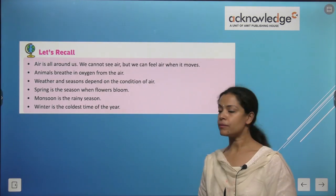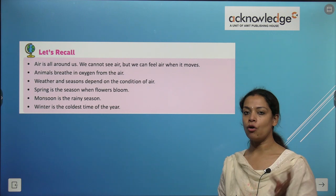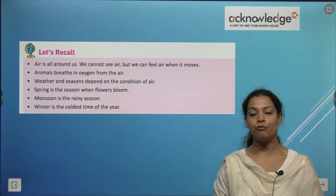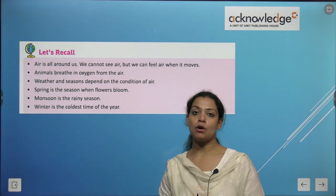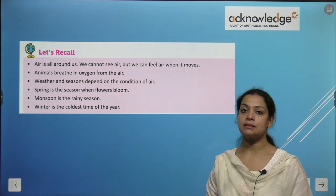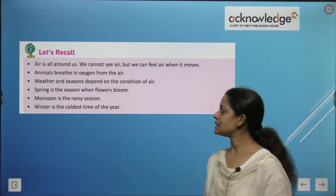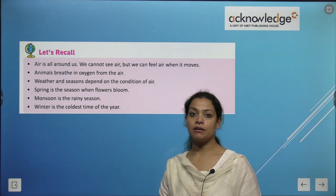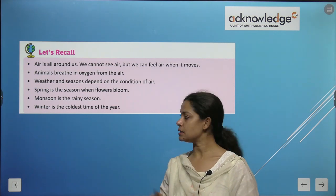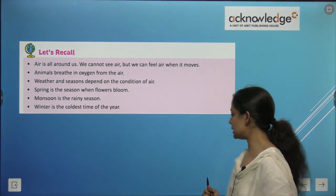Let's recall some key points quickly. Air is all around us — we cannot see air but we can feel it. Animals breathe in oxygen from the air. Weather and seasons depend on the condition of air. Spring is the season where flowers bloom. Monsoon is the rainy season. Winter is the coldest time of the year.